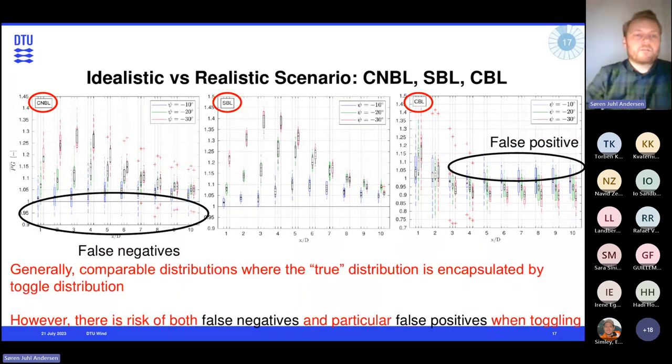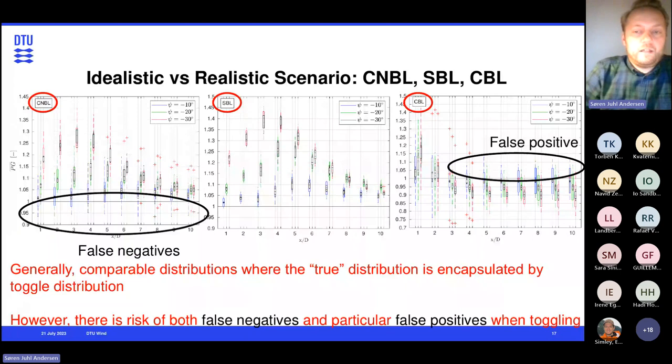However, there is a risk we can see of both false negatives and particularly false positives when we do this toggling. So over here for the conventional neutral boundary layer cases, there is a number of cases, particularly the outliers, when we move further downstream, where we see false negatives. So we could think that we lose power where we actually wouldn't lose power. And much worse, on the right-hand side, there is some cases for the convective boundary layers where we actually, if we were doing toggle tests, that we would be able to see significant false positive of up to 5% or even 10% power gains, where we would actually not see any in, if we knew everything with the background or the baseline. So that's, of course, a concern.